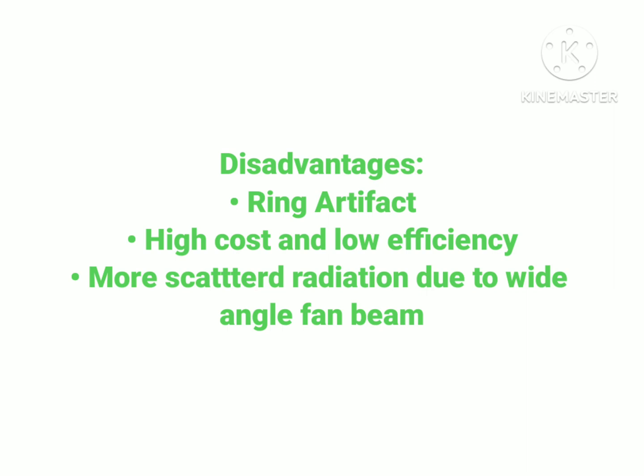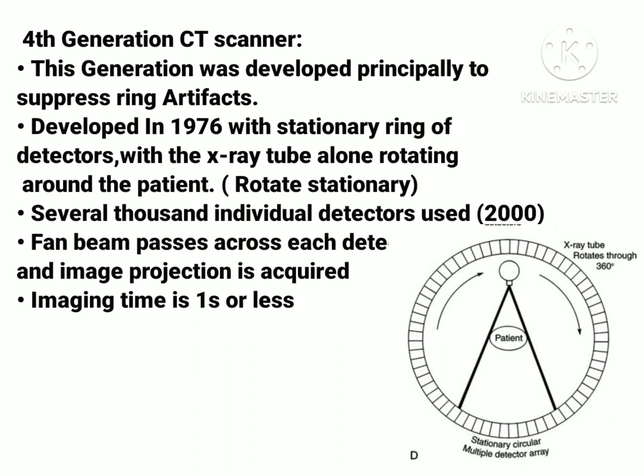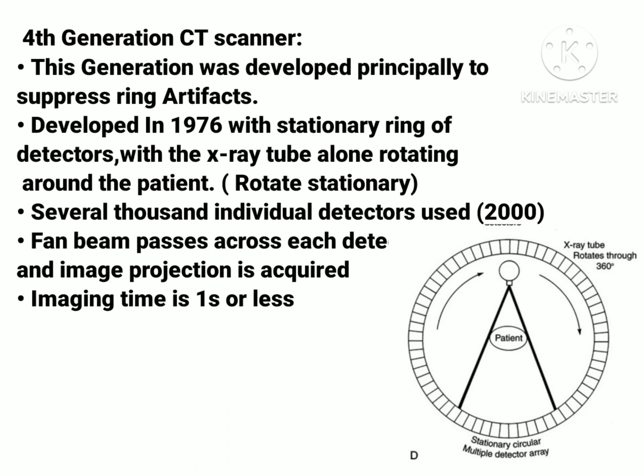Disadvantages of the third generation CT scanner: first is ring artifact — since detectors are attached in a ring-like fashion with the X-ray tube, if one detector is out of calibration it will give constantly erroneous readings at each angular position, resulting in a circular artifact known as a ring artifact. Second, it has high cost and low efficiency. Third, more scattered radiation is present due to the wide-angle fan beam.